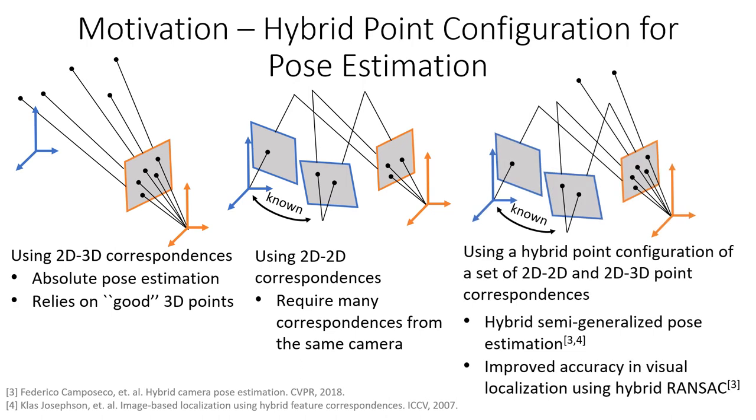Recently, it was shown that it is possible to use both 2D-2D as well as 2D-3D point correspondences for pose estimation. In this paper, we focus on this approach of pose estimation from hybrid point configurations between a pinhole camera which has unknown focal length and a generalized camera.